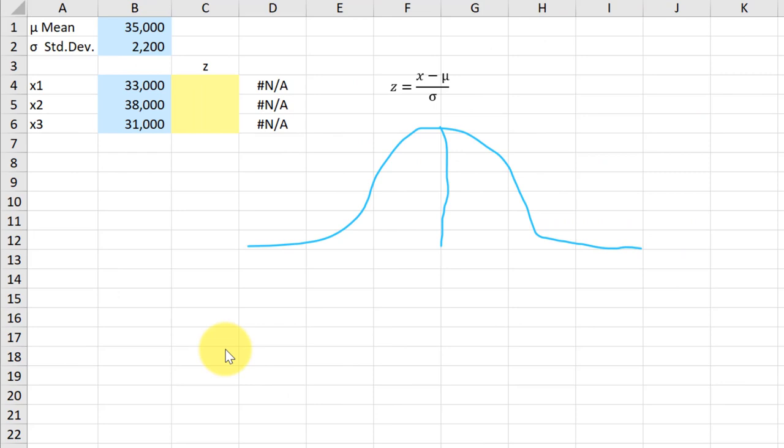I've opened up an Excel file and I've entered the data that we're given. The mean μ of 35,000, the standard deviation σ of 2,200, and then the three X values: 33,000, 38,000, 31,000. We're going to use this formula, which is the Z score is equal to the X value minus the mean μ divided by the standard deviation.